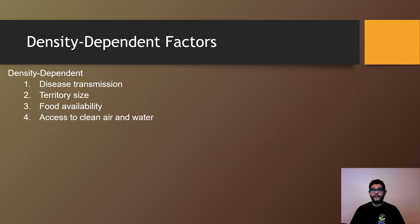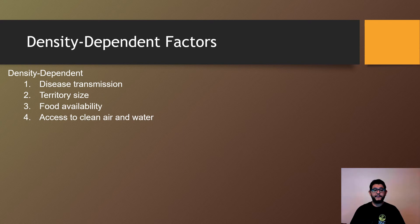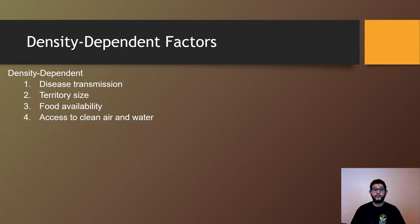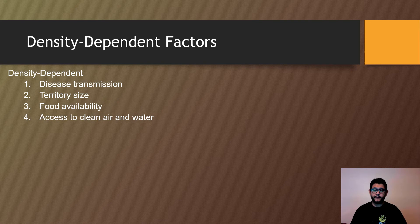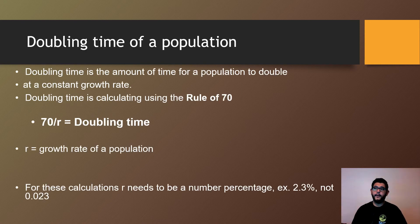Whereas density dependent factors are going to be more along the lines of disease transmission, territory size, availability of food, and access to clean air and water. So those things are going to be more pressured if there's more individuals. So if you've got a lot of people living in one area, these are going to be a big issue.